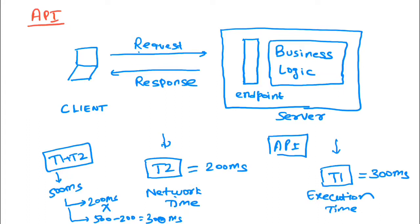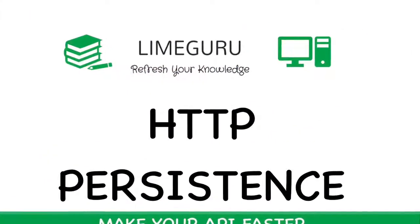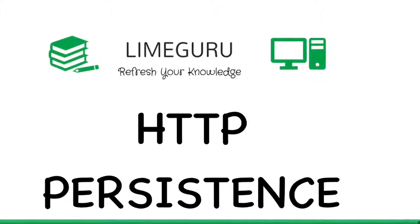The request and response network time is reduced to a huge extent, reducing the overall time observed by the client. That was the HTTP persistence and keep-alive concept in APIs. Apply these concepts whenever you are designing or deploying APIs to make them faster. Thank you for watching — do subscribe to the Limebrew channel and I'll see you in the next session.